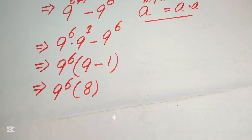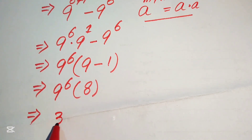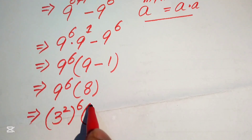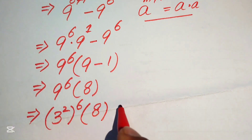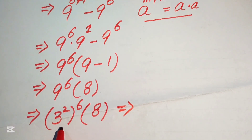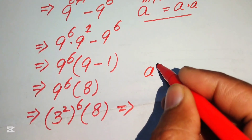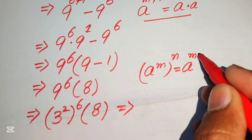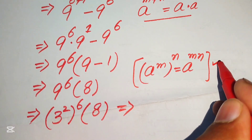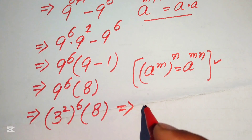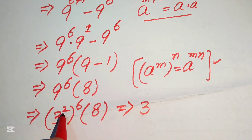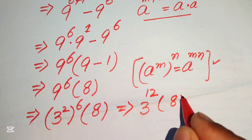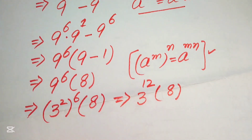Now we simplify 9^6. We write 9 as 3 squared, so we have (3^2)^6 times 8. Applying the power-of-a-power law — a to the power of m to the power of n equals a to the power of m times n — we multiply the exponents: 2 times 6 equals 12, giving us 3 to the power of 12 times 8.